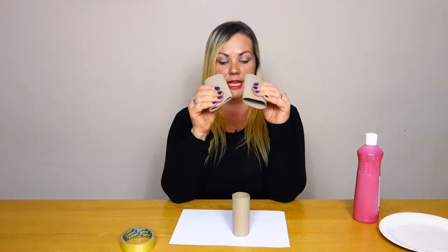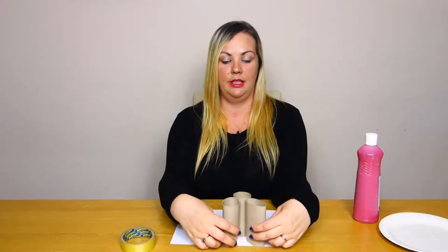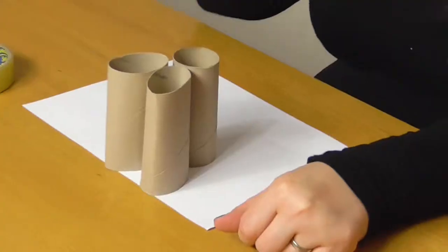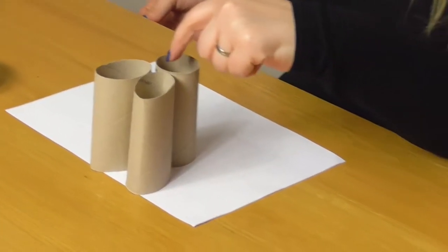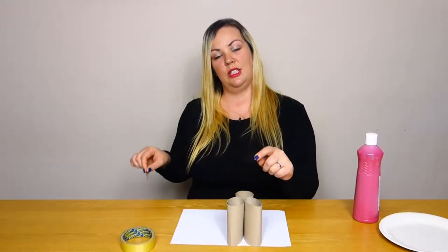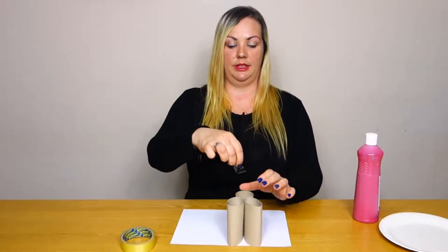We've squished them together and then we're going to put them on the top of our round one. We're going to take some sellotape and put some around these joints here, just to keep all of the toilet rolls together.